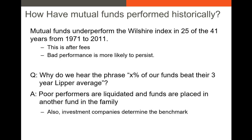So why do we continue to hear the phrase that X percent of our funds beat their three-year Lipper average? It's because there are many ways fund families can manipulate the number of managed funds that they actually manage. Poorly performing mutual funds are often liquidated and funds are placed into another fund in the same family that did outperform its three-year Lipper average.